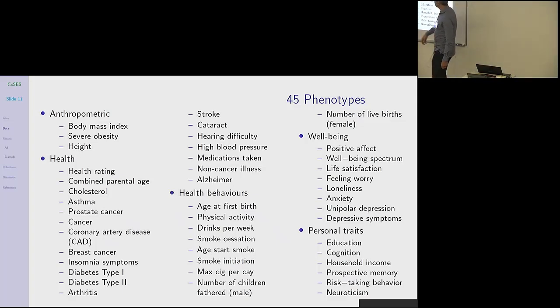So these are the traits then. We have basically anthropometric traits, BMI, severe obesity, high health rating, health traits, a bunch of health traits, combined parental age, cholesterol, asthma. Then we have a bunch of health behaviors, fertility, physical activity, drinks per week, smoking, cessation. Then we have a bunch of subjective well-being measures and depressive symptoms. And then we have what we call personal traits. These are socioeconomic traits like education, cognition, household income. And then we have something like risk-taking behavior and neuroticism.